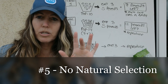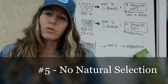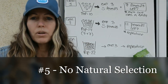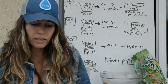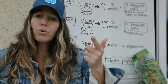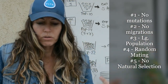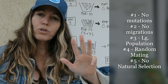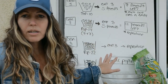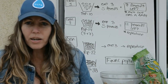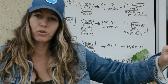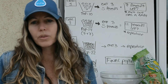Number five is no natural selection, meaning the environment did not change. The five principles of Hardy-Weinberg are: number one, no mutation; number two, no migration; number three, large population; number four, random mating; and number five, no natural selection. If during this lab the generations show shifting percentages, then one of those factors has been broken — and if just one is broken, evolution will happen within that species.